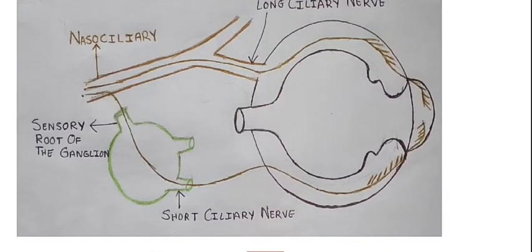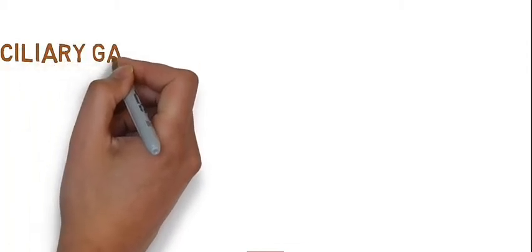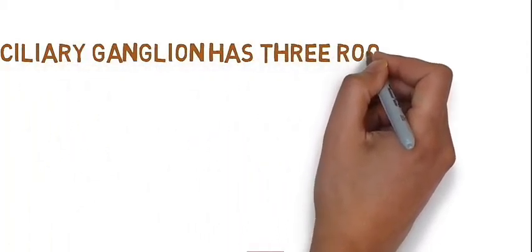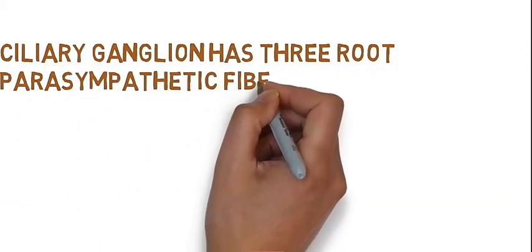So the ciliary ganglion has 3 roots. Parasympathetic fibers relay here. Sympathetic and sensory fibers just cross the ganglion.